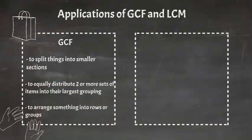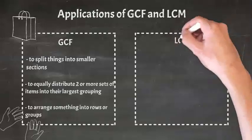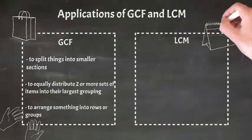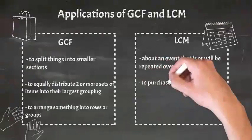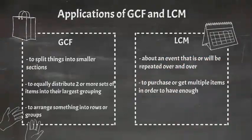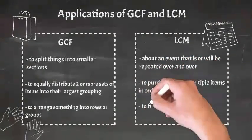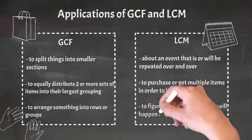There are also specific instances in which we know to find the least common multiple. These instances include situations about an event that is or will be repeated over and over, to purchase or get multiple items in order to have enough, or to figure out when something will happen at the same time.